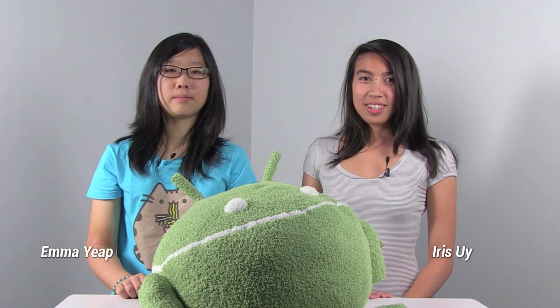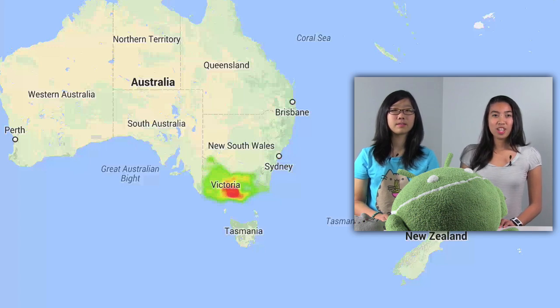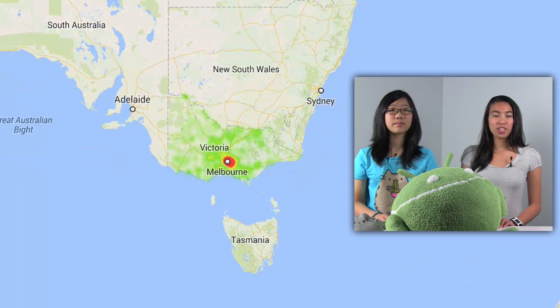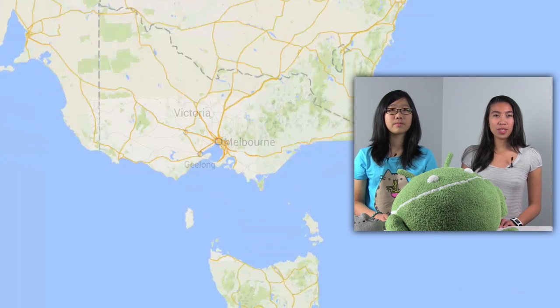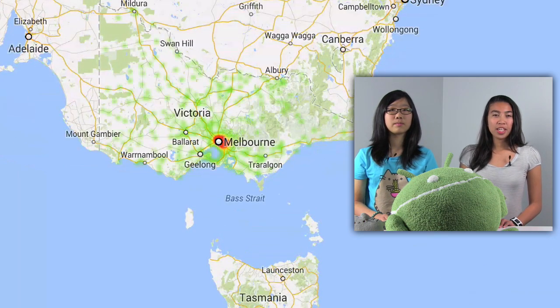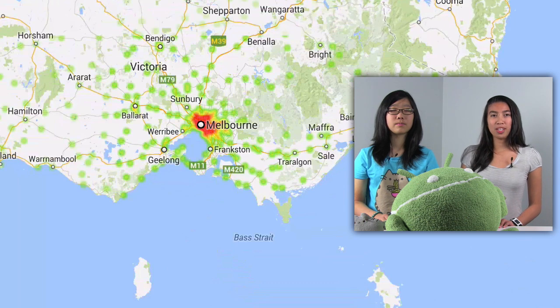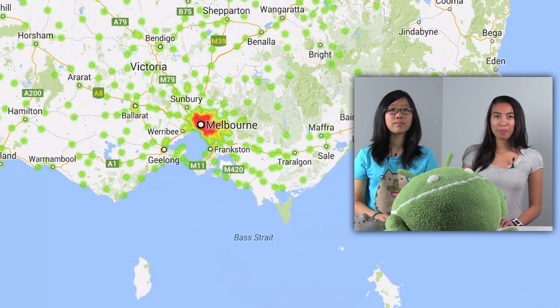We've added heat maps to the Google Maps Android API Utility Library. On a map, we use a heat map to visualize a large number of geographical points. Different colors or opacities represent areas with different intensities of points. In general, higher intensities correspond to warmer colors, hence the name.